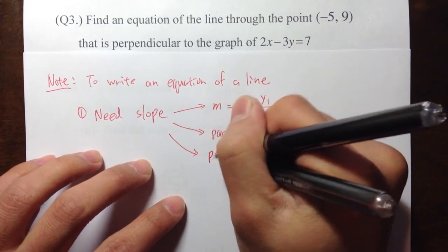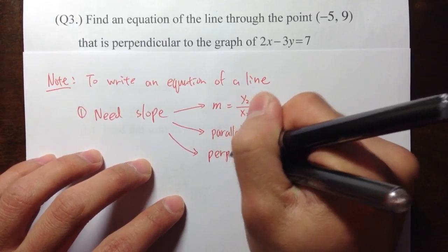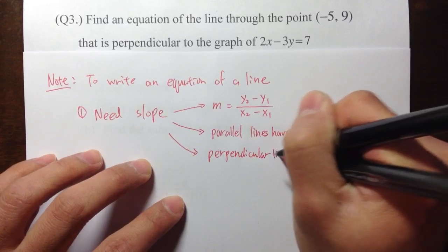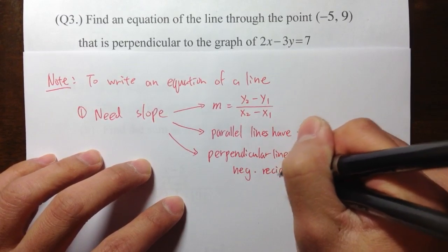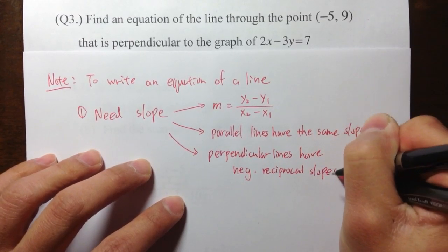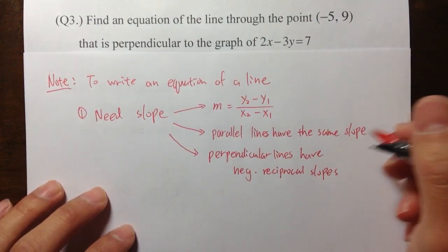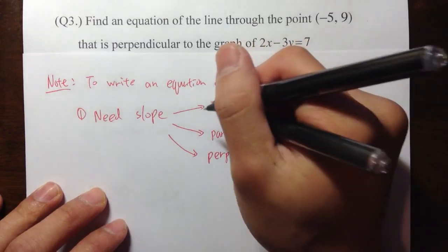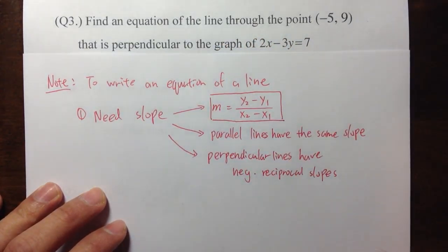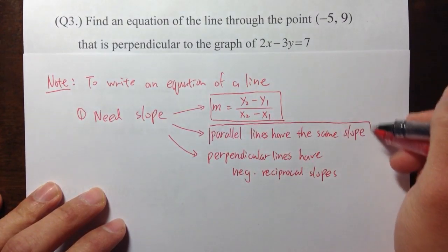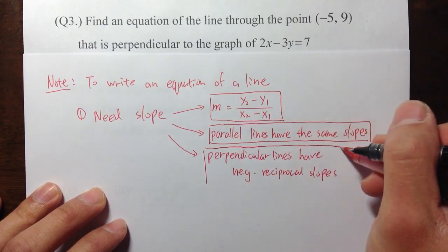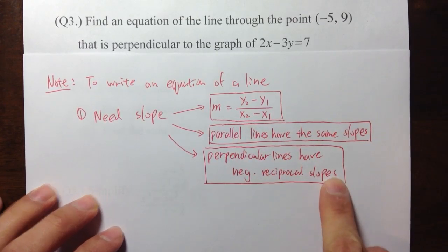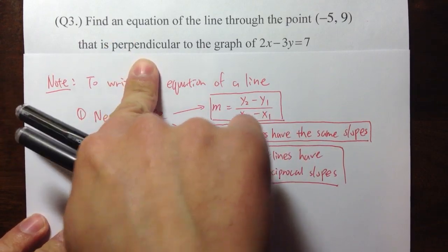And then for perpendicular lines, and that's exactly the one that we're dealing with right here, perpendicular lines have negative reciprocal slopes. So these are the three things that we need to know: the slope formula if we have two points; if the equation asks you to do parallel lines, they have the same slopes; and for perpendicular lines, they have negative reciprocal slopes. That's the one we're going to deal with, because we want perpendicular lines. Perpendicular lines cross each other at exactly a 90-degree angle.